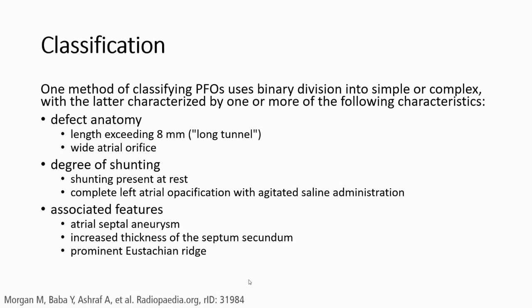One method of classifying PFO uses a binary division into simple or complex, with the latter characterized by one or more of the following characteristics. Defect anatomy: length exceeding 8 mm, long tunnel, wide atrial opening. Degree of shunting: shunting present at rest, complete left atrial opacification with agitated saline administration. Associated features: atrial septal aneurysm, increased thickness of septum secundum, prominent Eustachian ridge.